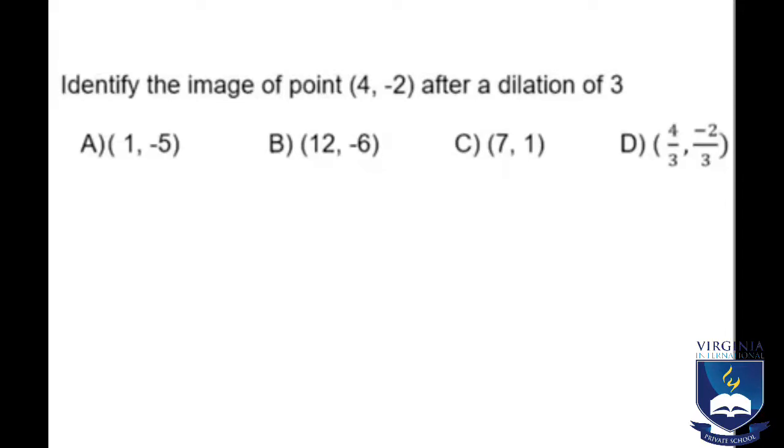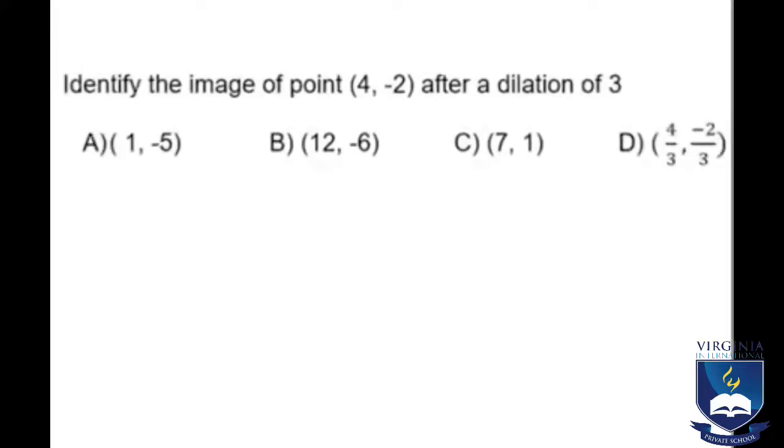First step, we're going to write 3(4, -2). Then we're going to distribute: 3 times 4 and 3 times -2. So 3 times 4 is 12, and 3 times -2 is -6. Our final answer is B.